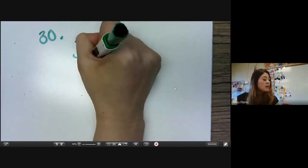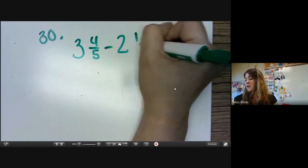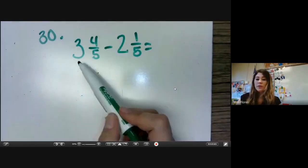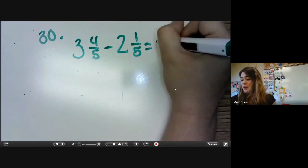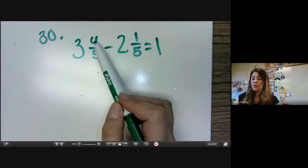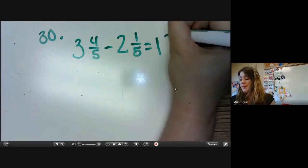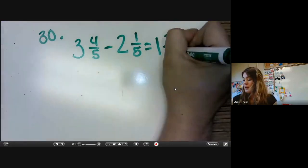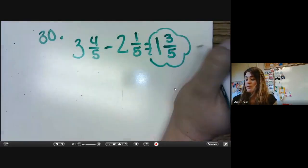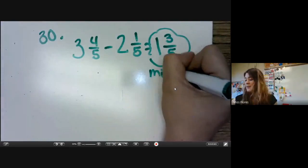It says, Troy walked two and one-fifth miles on Monday. He walked three and four-fifth miles on Wednesday. How many more miles did Troy walk on Wednesday than on Monday? So what we're going to do is we're going to subtract three and four-fifths minus two and one-fifth. So we subtract the whole numbers. Three minus two is one. And we subtract our numerators. Four minus one is three. And we carry over the denominator. So your answer is one and three-fifths. And our label is miles.